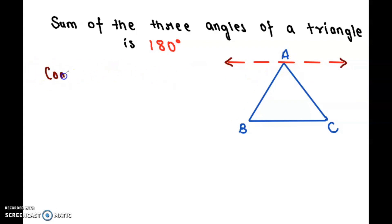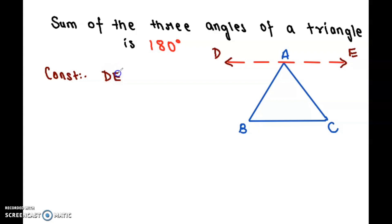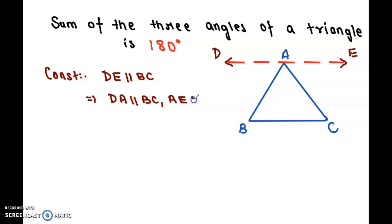First, we need to do a construction. What I have drawn here with the red marker is the extra thing added to our diagram. I have drawn a line DE passing through A, and this line is parallel to BC. So DA is parallel to BC, and AE is also parallel to BC.